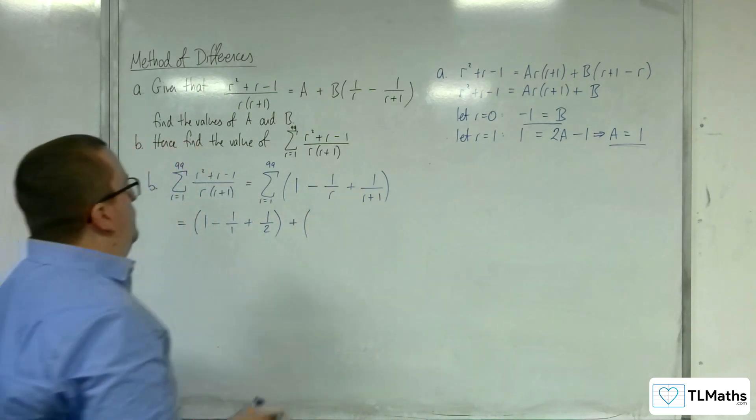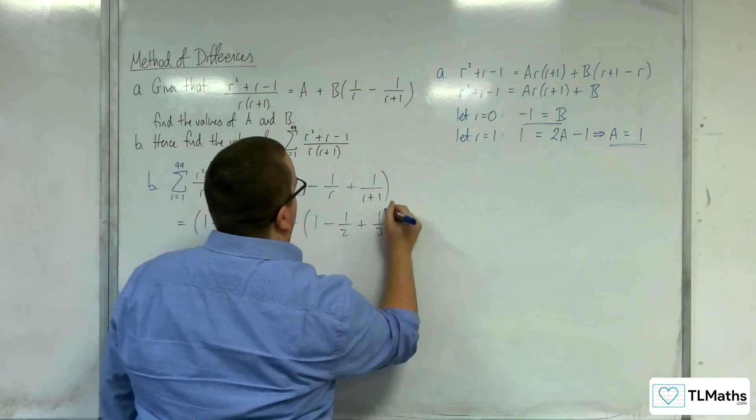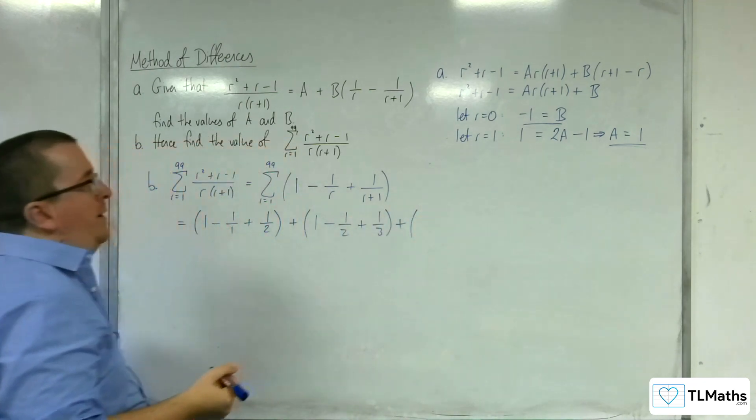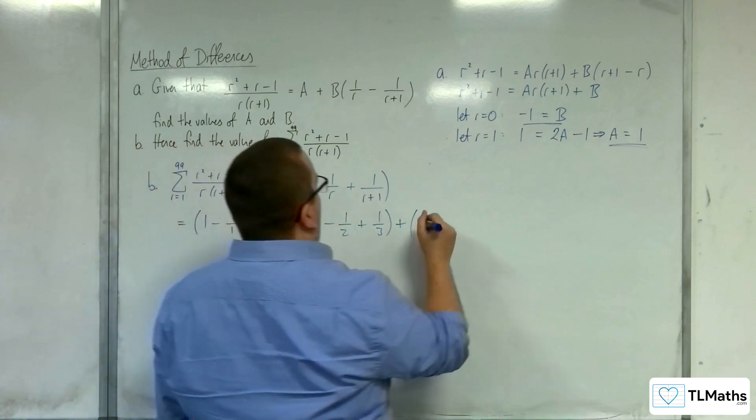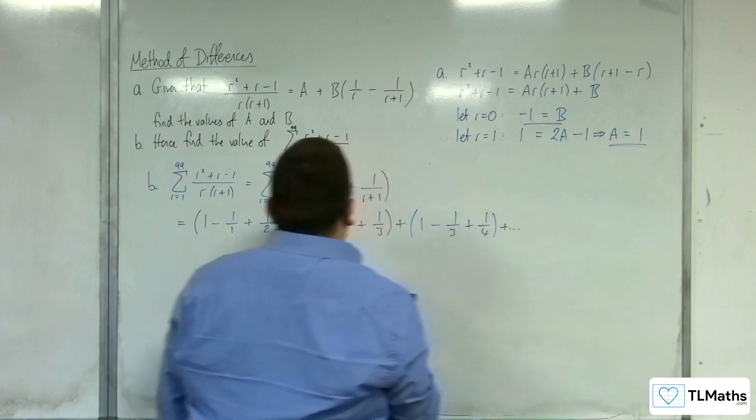Well, let's substitute in r is 2. So I get 1 take away 1 over 2 plus 1 over 3. And then substitute in r is 3. We're going to get 1 take away 1 over 3 plus 1 over 4 plus a load of other terms.